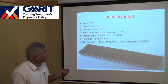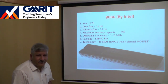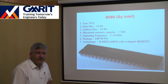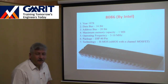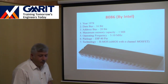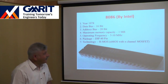The 8086's operating frequency was 5 to 10 MHz. Intel launched the 8086 in three versions: the basic 8086 at 5 MHz, the 8086-2 at 8 MHz, and the 8086-1 at 10 MHz.